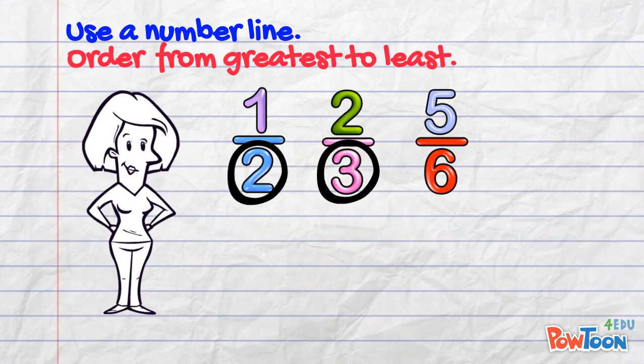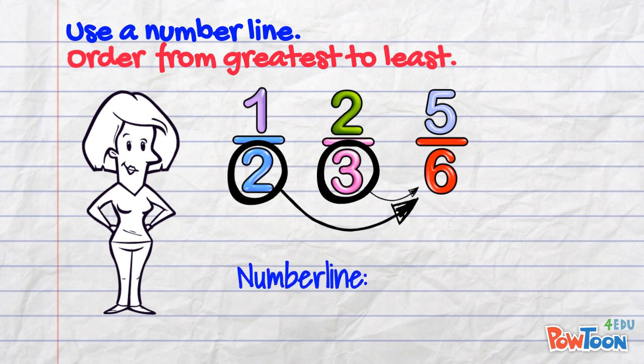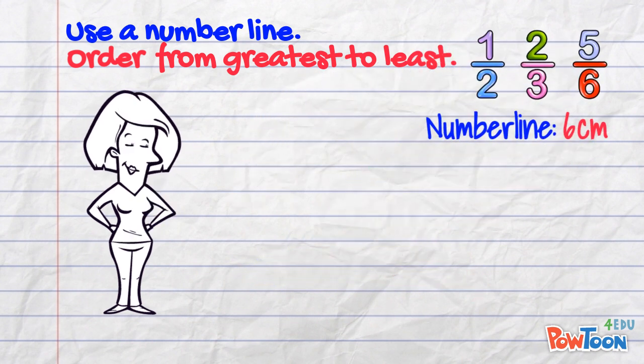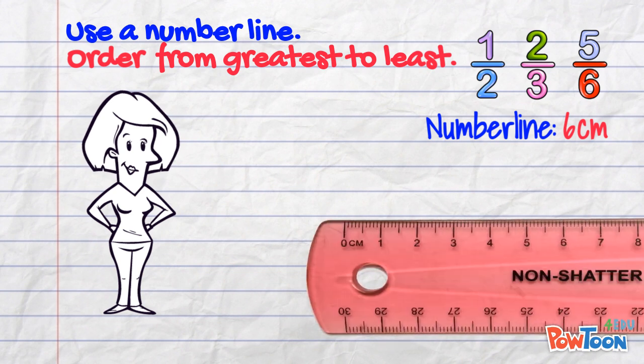2 and 3 are factors of 6 so the number line can be 6cm long. Let's just move these aside. To make a number line you have to use a ruler!